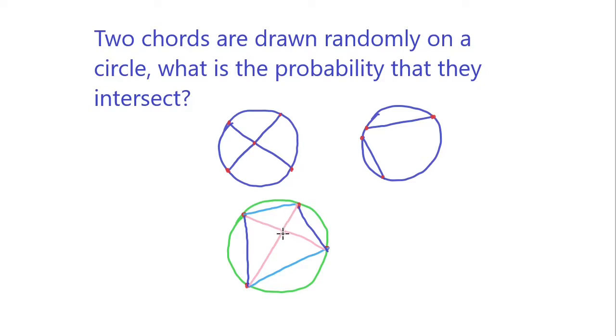Out of these three ways, there's only one way that it's actually going to get you an intersect. And the other two ways you basically get two chords that don't intersect.